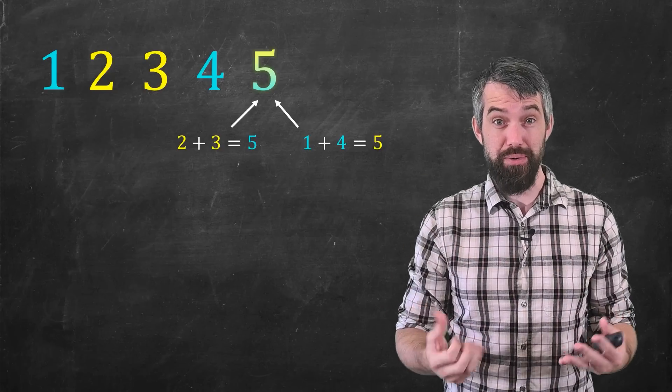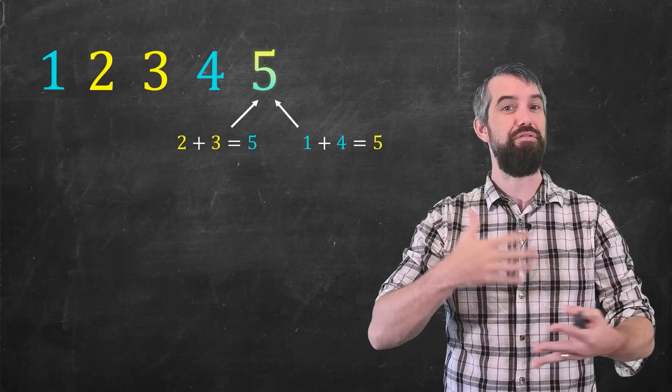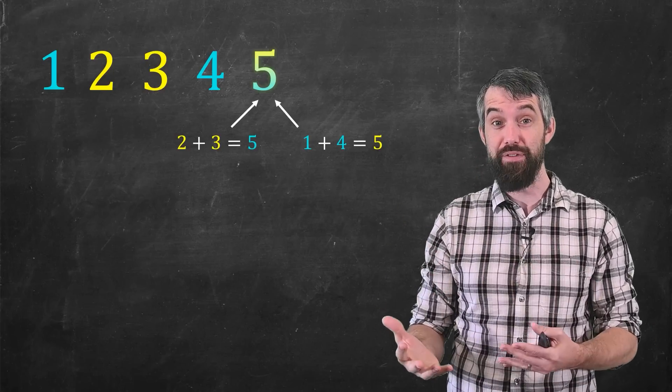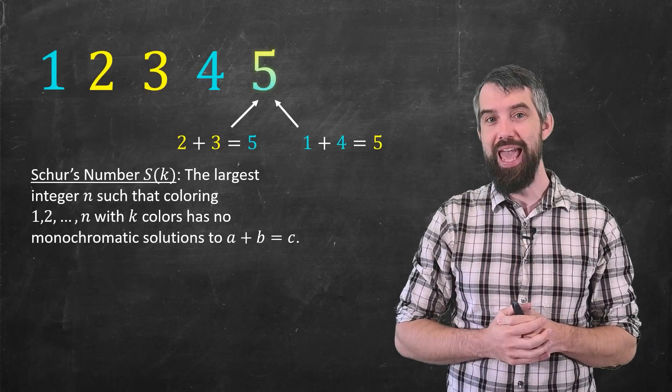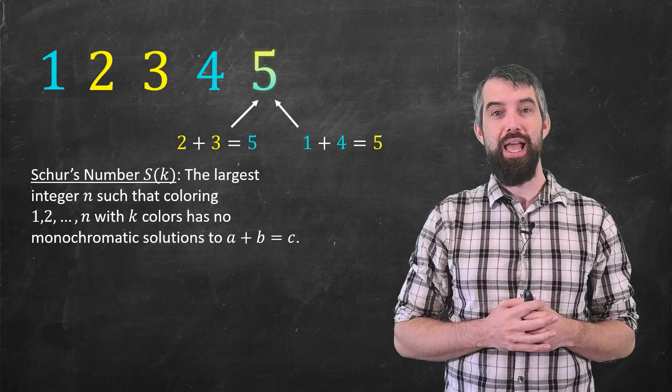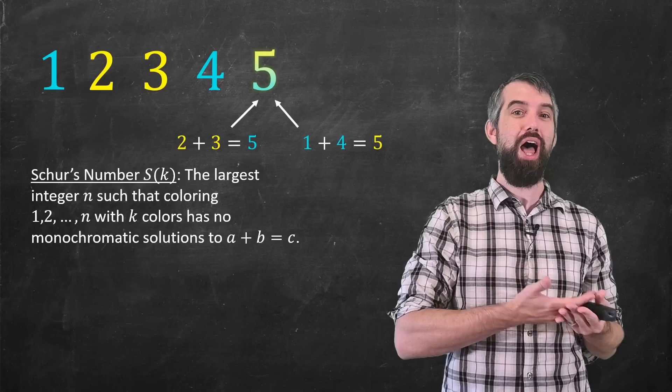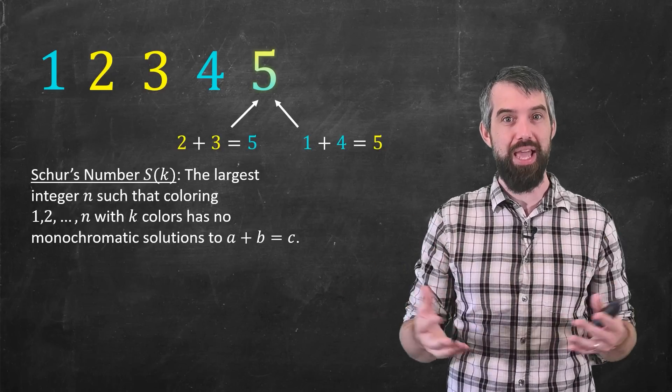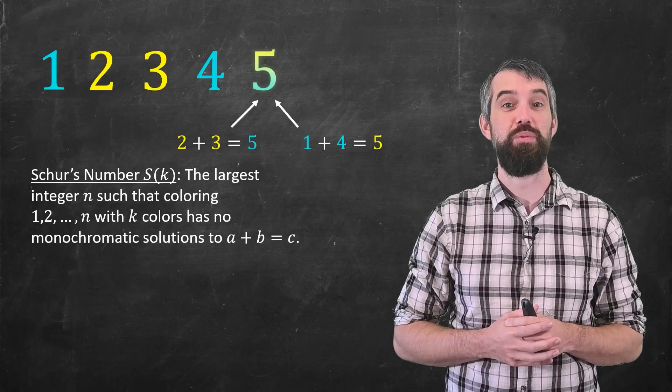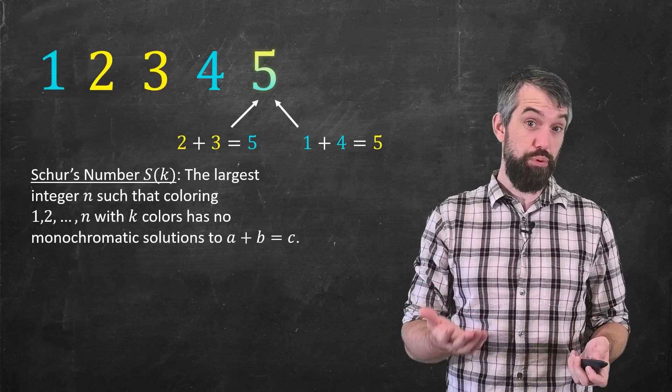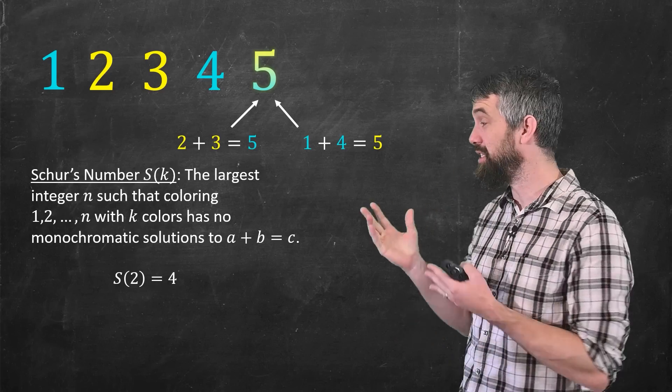So what I've argued to you is that for two colors, I could color four numbers and have none of these triples, but it's impossible to color five of them. And so now we have a definition. This is the Schur number, which I'll denote s of k. k is the number of colors. And this s of k gives the largest integer n such that if you try to color the numbers 1 up to n with your k colors, that you would have no monochromatic solutions to the equation a plus b equal to c.